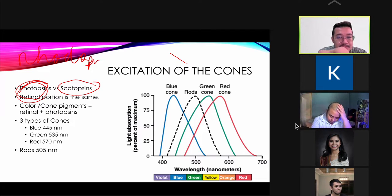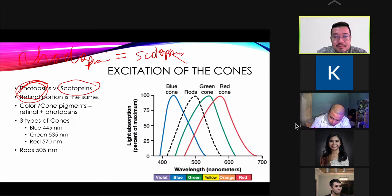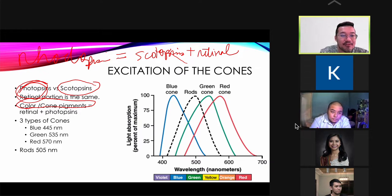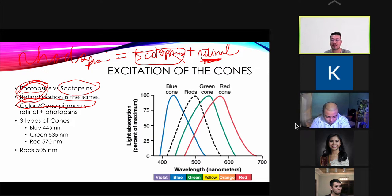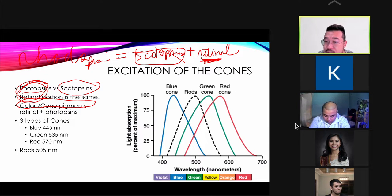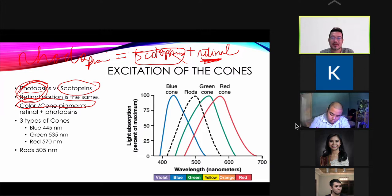Rhodopsin is made up of scotopsin plus retinal. Your color or cone pigments are made up of photopsins plus retinal. The excitation of cones gives you color vision. A useful mnemonic: Cones, letter C, for color vision.